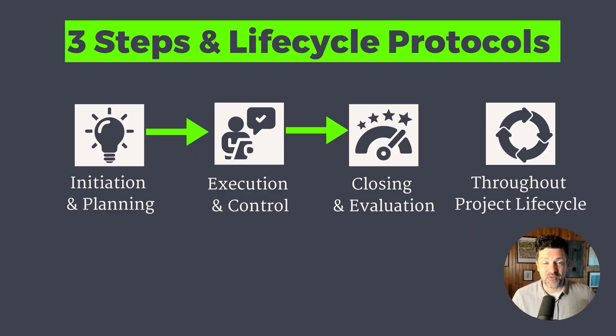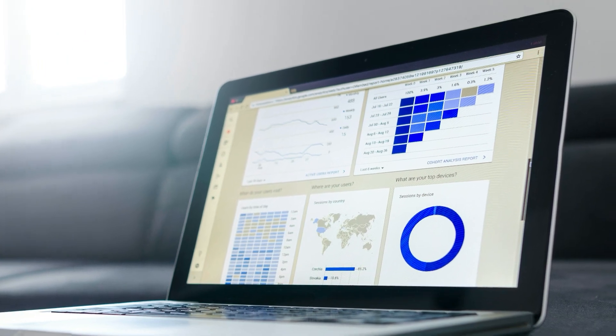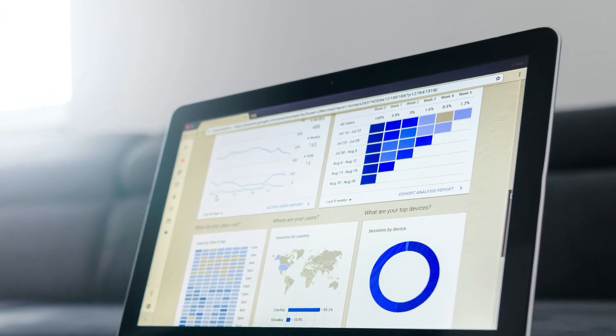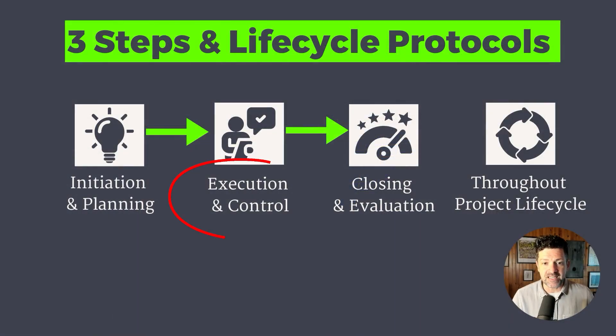Here are the four major areas of effective project management. First, the initiation and planning stage — setting clear objectives and SMART goals, then detailed planning, building work breakdown structure documents and Gantt charts. We're going to talk a lot about Gantt charts and how you can plug in the outputs of your AI into the project management tools you're already using. Then getting into execution and control.